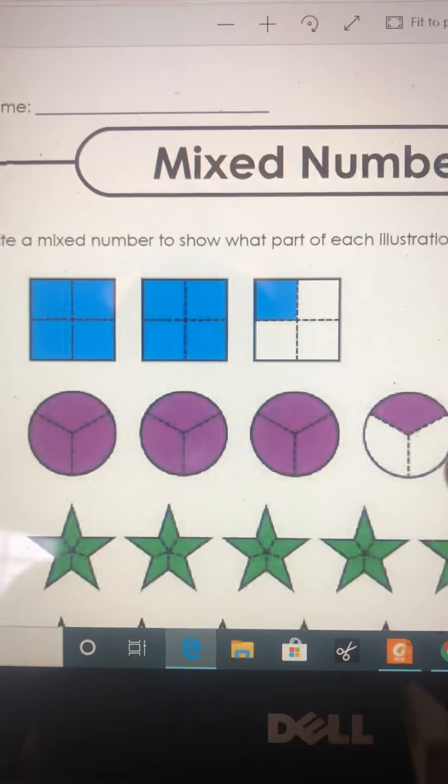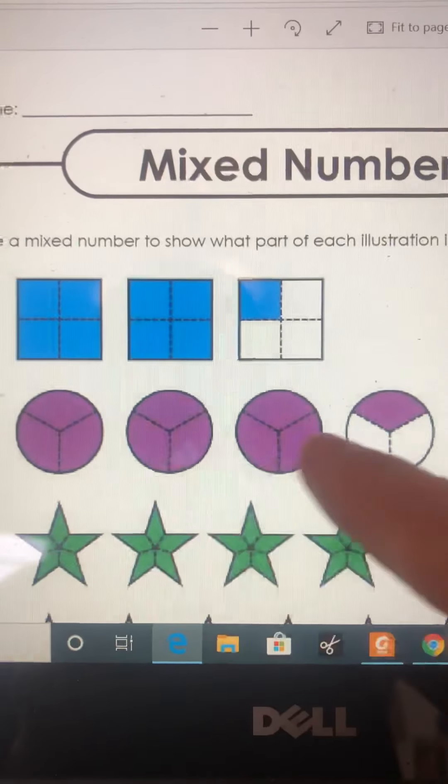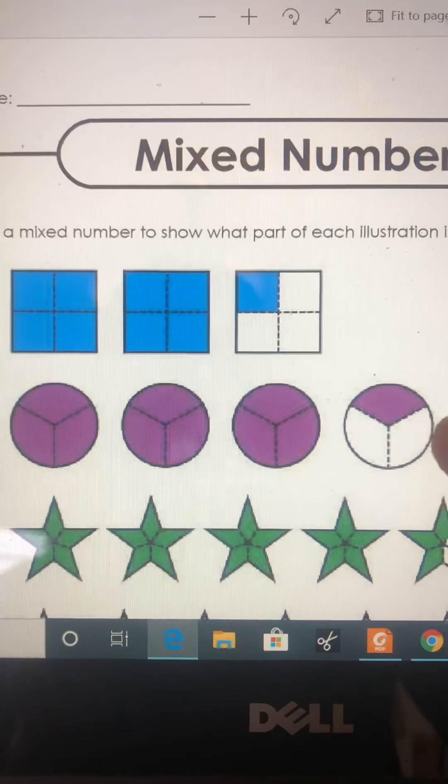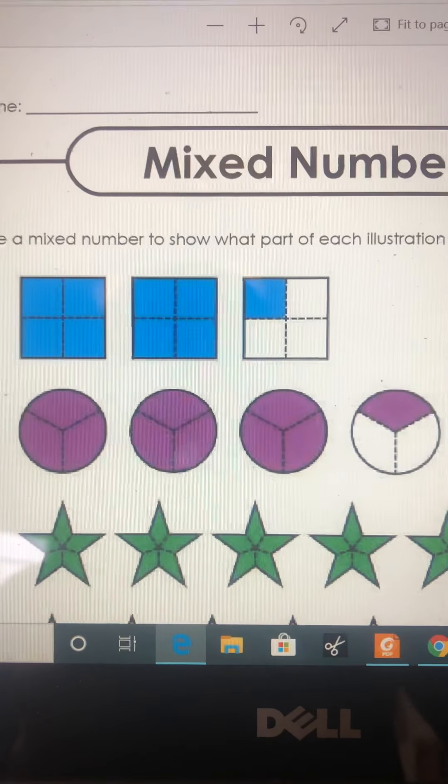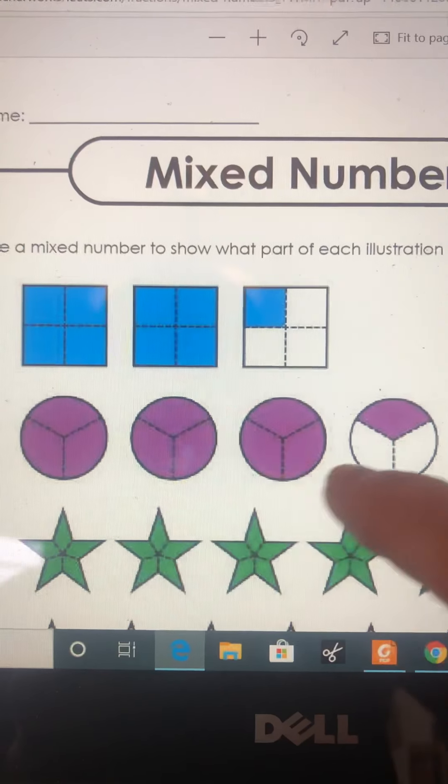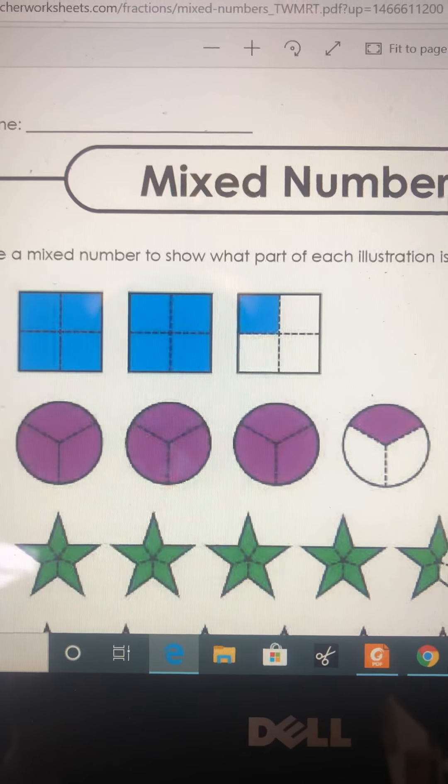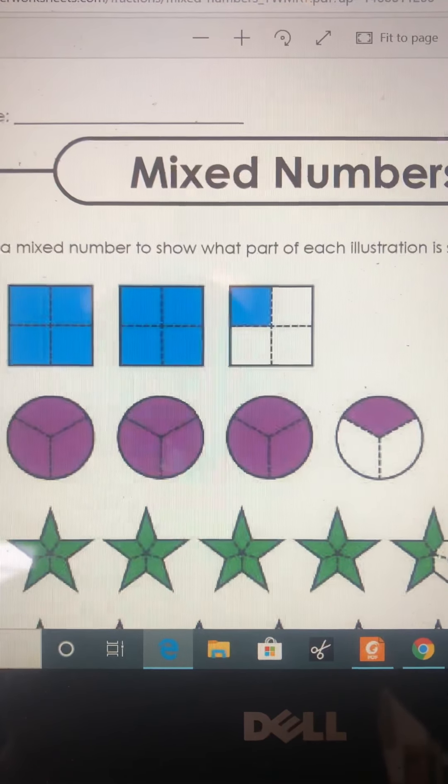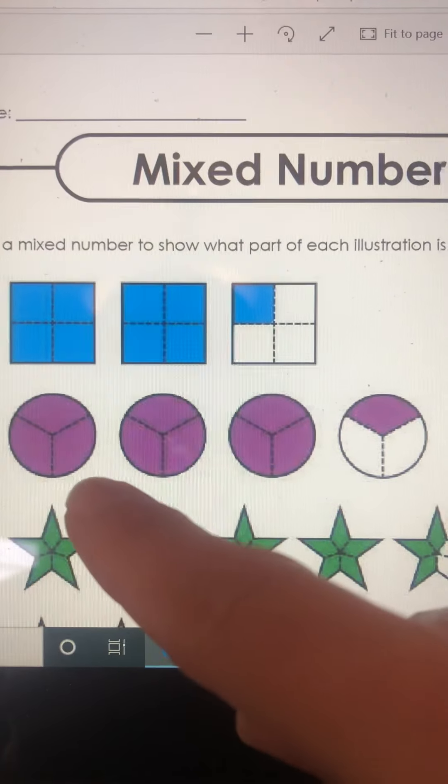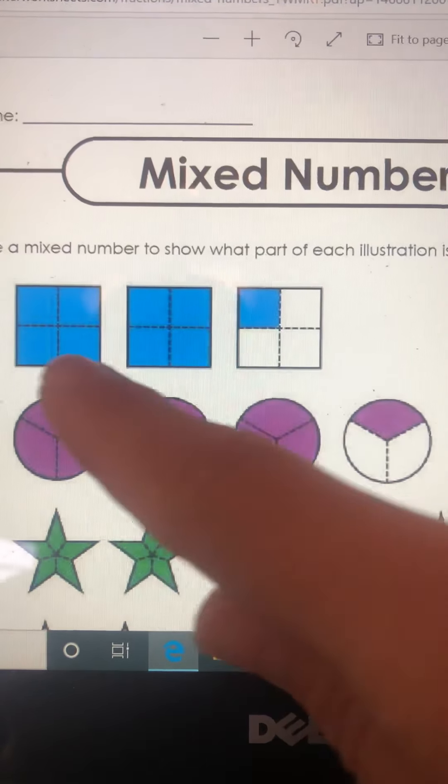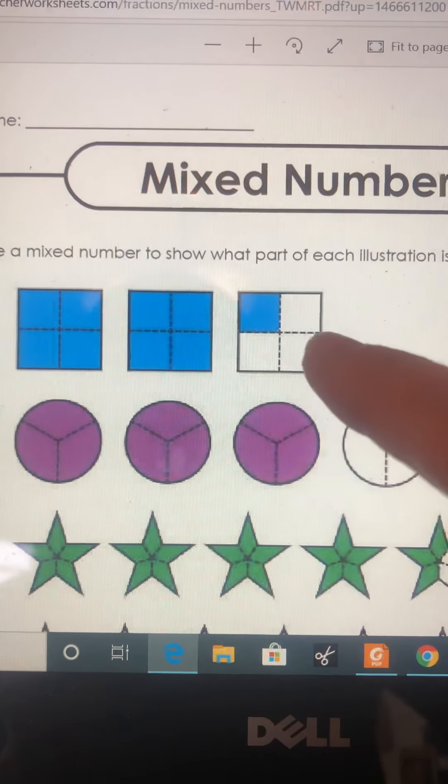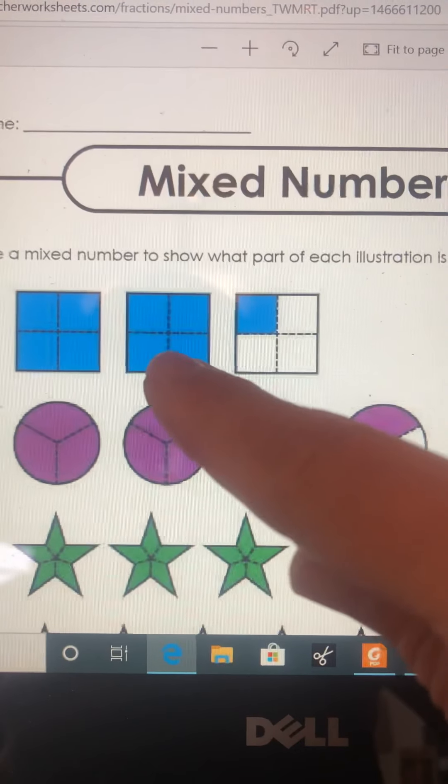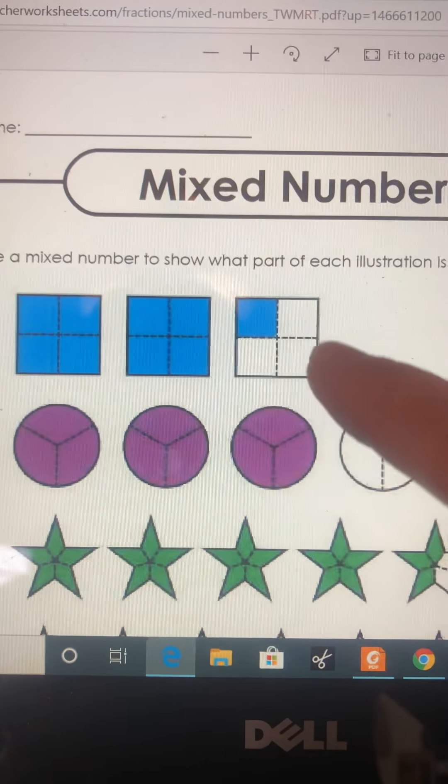For this one right here, we have our shapes divided into three equal pieces, so the denominator would be out of three. How many pieces do we have? We have three, six, nine, ten, so it would be ten-thirds. That is the improper fraction, so that would be ten-thirds, or you could say it's three and one-third. For this you could say two full, so two and one-third.